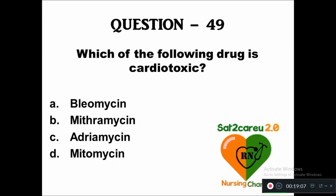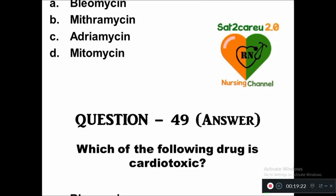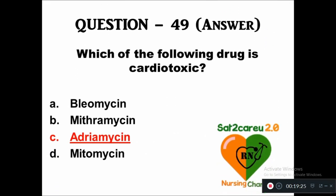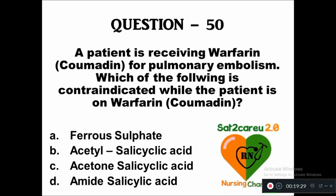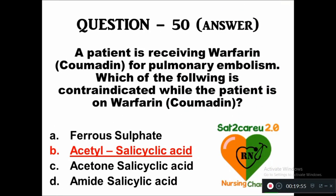Question 49: Which of the following drugs is cardiotoxic — option A: bleomycin, B: mithramycin, C: adriamycin, D: mitomycin. The cardiotoxic effect is most prominent with adriamycin. Question 50: A patient is receiving warfarin for pulmonary embolism — which of the following is contraindicated — option A: ferrous sulfate, B: acetylsalicylic acid, C: acetone salicylic acid, D: amide salicylic acid. The right answer is acetylsalicylic acid (aspirin) is contraindicated when the patient is taking warfarin.